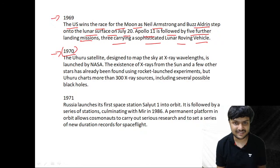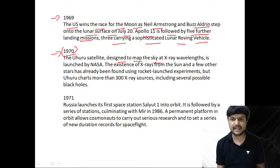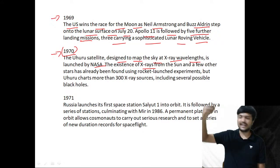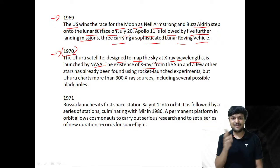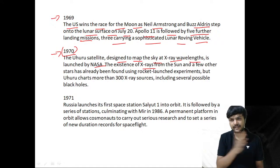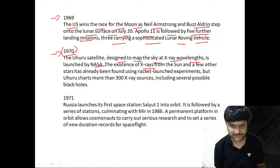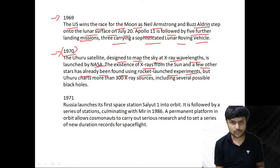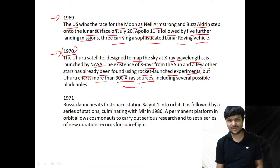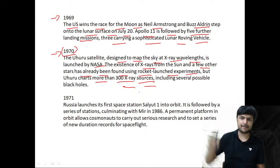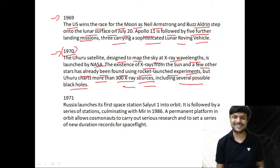In 1970, the Uhuru satellite, designed to map the sky at X-ray wavelengths, is launched by NASA. Light is the only information that comes from the sky, spanning the entire electromagnetic spectrum — infrared, visible, ultraviolet, X-ray, gamma ray. The existence of X-rays from the Sun and a few stars had already been found using rocket-launched experiments, but Uhuru charts more than 300 X-ray sources, including several possible black holes.